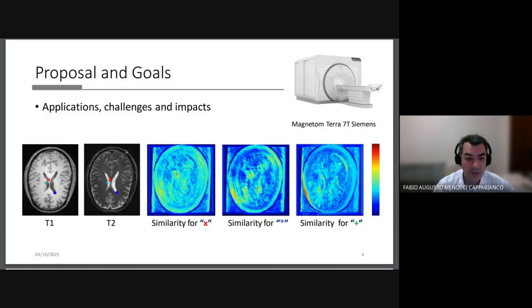Our work focuses on the similarity metric element of the registration applied to multimodal images. Multimodal images are images that have the same content with different appearance, such as this example here where we have T1 and T2 images of the brain that are acquired with MRI scanner.